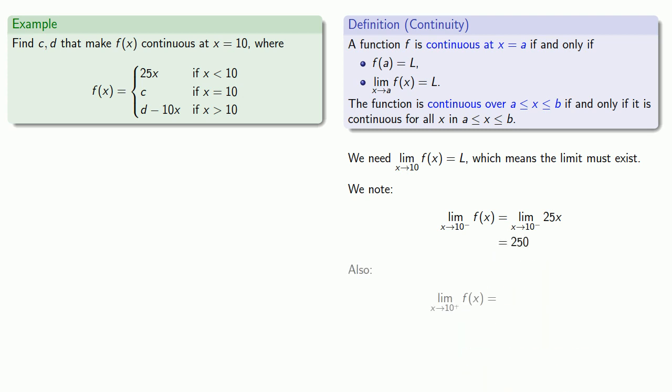Likewise, as x approaches 10 from above, x is greater than 10 and so f of x looks like our third formula d minus 10x, and so as x approaches 10 from above our function approaches d minus 100.